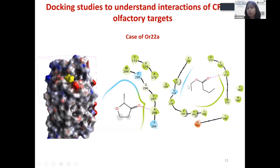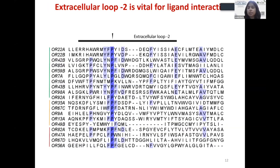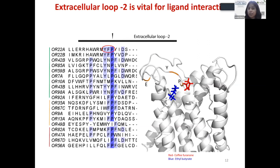These residues came up with coffee purinone as well as the known ligand ethyl butyrate. I then looked deeper into what the extracellular loop is doing, and found that the proline is a well-conserved residue across olfactory receptors in Drosophila — specifically in Or22a and other generalized receptors responding to coffee purinone. This was quite interesting: the loop is a vital area for ligand interaction, seen not only with this molecule but with known ligands as well.